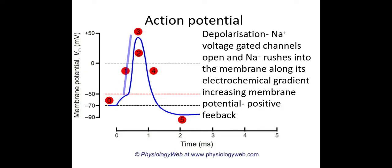The first thing that happens in an action potential is depolarisation, which is where the graph slopes upwards. In depolarisation, the sodium voltage-gated channels open in the membrane, and because there is a high concentration of sodium outside of the neuron, a lot of sodium rushes into the membrane along its electrochemical gradient. This movement of positive ions into the membrane increases the membrane potential. This is an example of positive feedback, because when the sodium voltage-gated channels open, it triggers others along the membrane to also open.